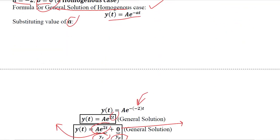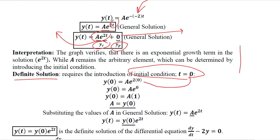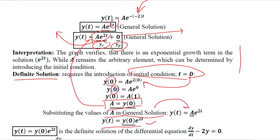This was the homogeneous case as a mathematical example. We can also find the definite solution. These lines are based on the diagram we understood. For the definite solution, we introduce the initial condition where t equals 0 and substitute it. Once we do this, we find the value of the arbitrary constant a, which we then put into the general solution. The result is the definite solution, with the arbitrary constant removed.